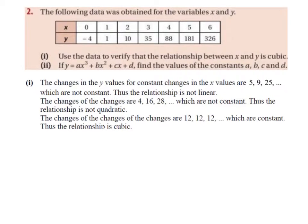If the second differences were the same, or the change of the changes was constant, we would say that it was quadratic. This is not the case. Now we need to find the difference between the second differences. The changes of the changes of the changes are 12, 12, and 12. To get from 4 to 16 is a difference of 12, from 16 to 28 is a difference of 12, and so on — which are constant. Thus the relationship is cubic.